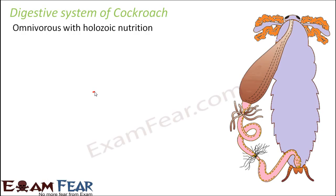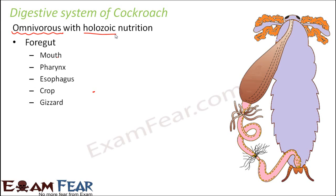First, let us know the type of nutrition for cockroach. Cockroaches are omnivorous, meaning they feed on both plants as well as animals, similar to human beings. They have holozoic nutrition, which means intake of solid food. For example, they can feed on hair, small insects, and cooked food particles.